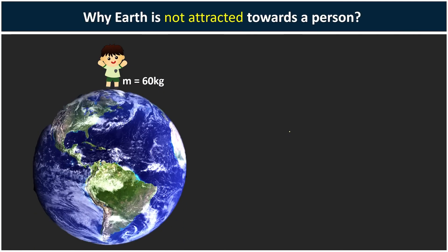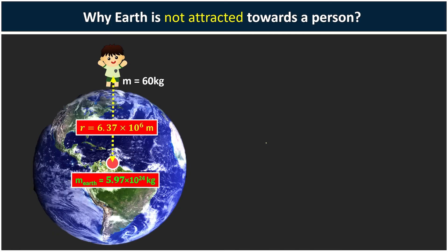But what happens if the guy is now standing on the surface of the Earth? Why is the Earth not attracted towards the person? We know the Earth has a massive mass of 5.97 times 10 to the power of 24 kg. Since the boy is on the surface, they are separated by the distance of the radius of the Earth.